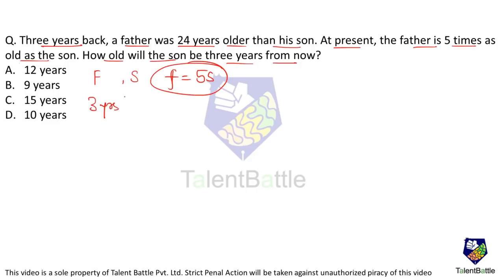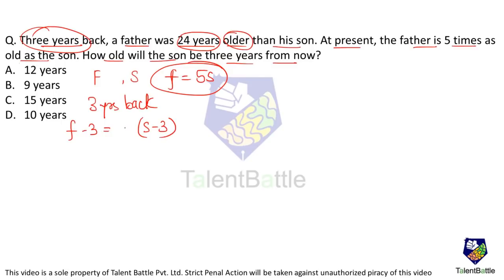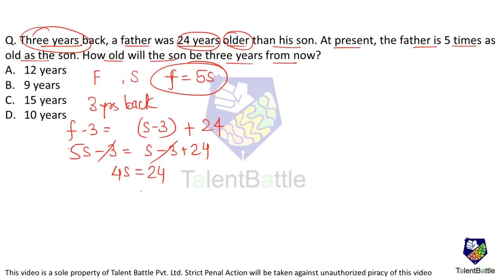Now 3 years back, the age of the father is F−3 and the age of the son is S−3. But 3 years back, the father was 24 years older than his son, so F−3 = (S−3) + 24. Substituting F = 5S: 5S−3 = S−3+24, so the −3 terms cancel and 4S = 24.